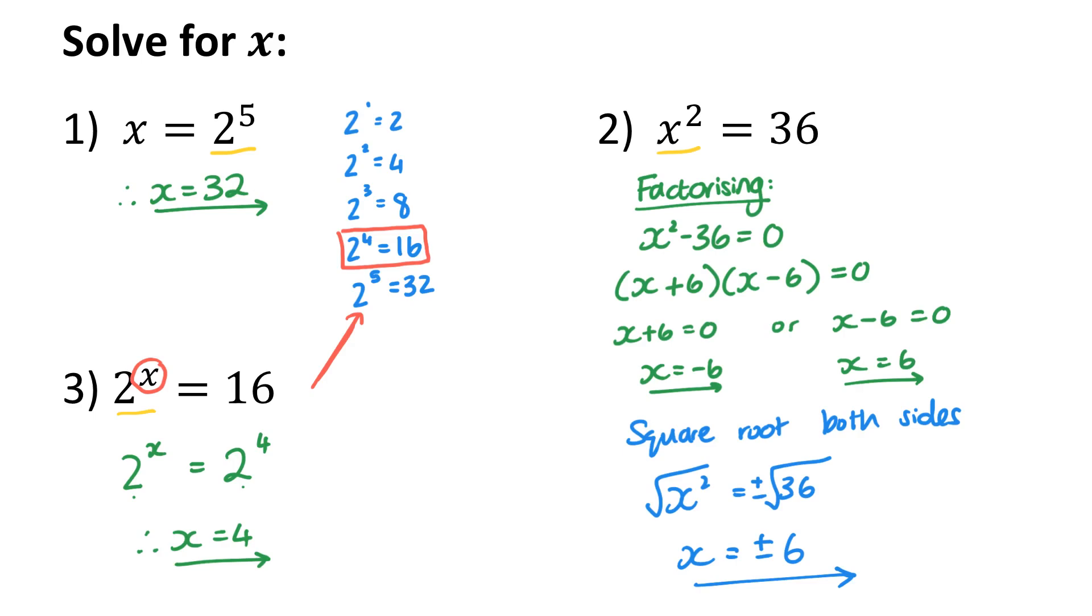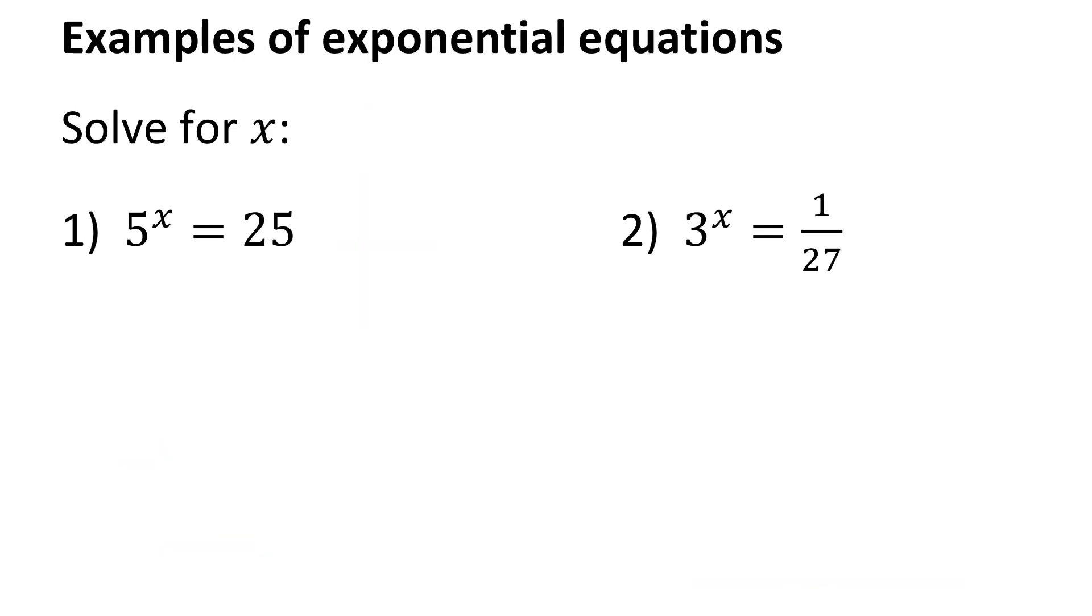The equations I'm going to focus on in this video are ones like number 3, where I'm trying to solve for what the exponent is that will make the equation true. Here I have two examples where I'm solving for x in the exponent. The standard strategy is to make the bases the same. Looking at the first example, I have 5^x. You need to write 25 with the base of 5. 5 squared is 25. Now since I have the same bases, I can assume that the exponents must be equal. Therefore, x is equal to 2.